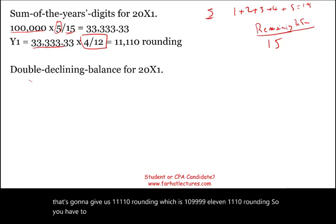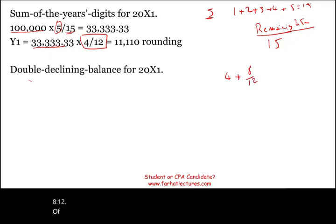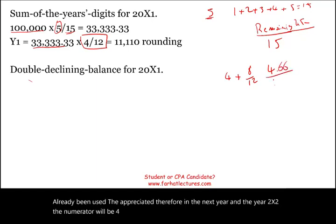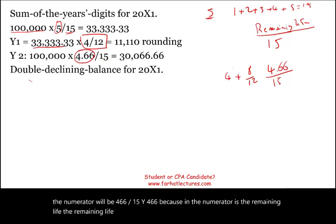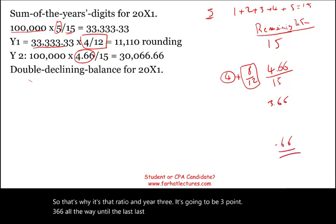For year two under SYD, the remaining life starting in X2 is four years plus 8/12 of a year, because the first four months were already depreciated in year one. So the numerator becomes 4.67 divided by 15, multiplied by the depreciable cost. This pattern continues — year three uses 3.67, and so on, down to 0.67 (8/12) in the final partial year.